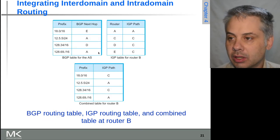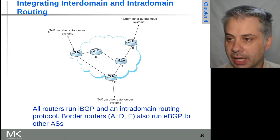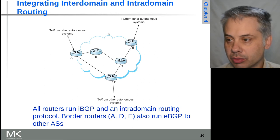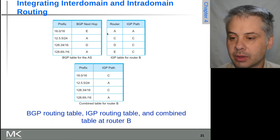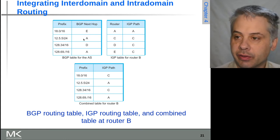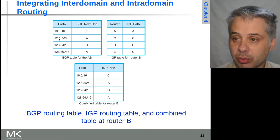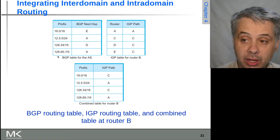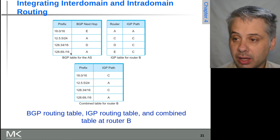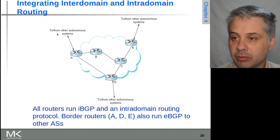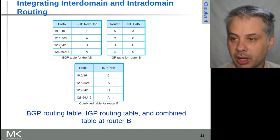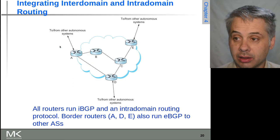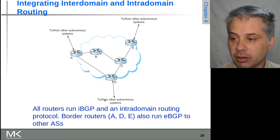Router B is here, and router B knows it can get to 18.0/16 via E because that's a network out there. Then via router A as next hop, we have two different address ranges: 12.5.5/24 and 128.69/16 out this way, and then 128.34/16 is out this way somewhere.